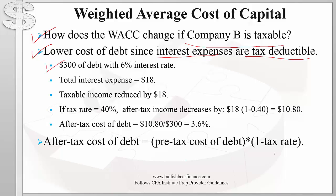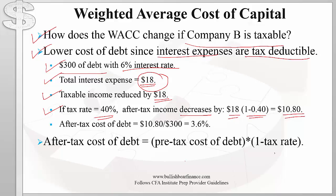In the case of Company B, we had three hundred dollars of debt and the interest rate was six percent, meaning total interest expense would be eighteen dollars. Eighteen dollars would reduce taxable income by the same amount. If Company B was taxable at forty percent, the after-tax income would only decrease by eighteen dollars times one minus the tax rate, which is ten dollars and eighty cents. This means the company's net income would not decrease by the full interest expense of eighteen dollars, but only by ten dollars and eighty cents.